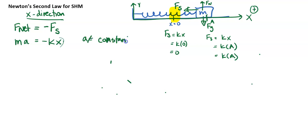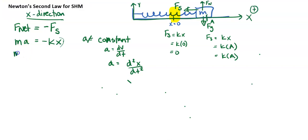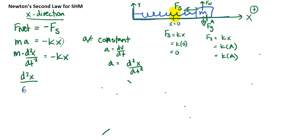Since acceleration changes with position, we need to use calculus. We know acceleration is dv/dt, and we want to deal with position, so acceleration is the second derivative of position with respect to time. Plugging that in, we have m·(d²x/dt²) = negative kx. Dividing both sides by m gives d²x/dt² = negative (k/m)·x.